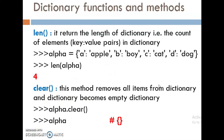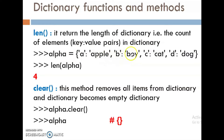Next one, dictionary functions and methods. First one, len function — it returns the length of the dictionary, that is the count of elements, key-value pairs in a dictionary. Alpha is equal to: a-apple, b-boy, c-cat, d-dog. Use here this len function.